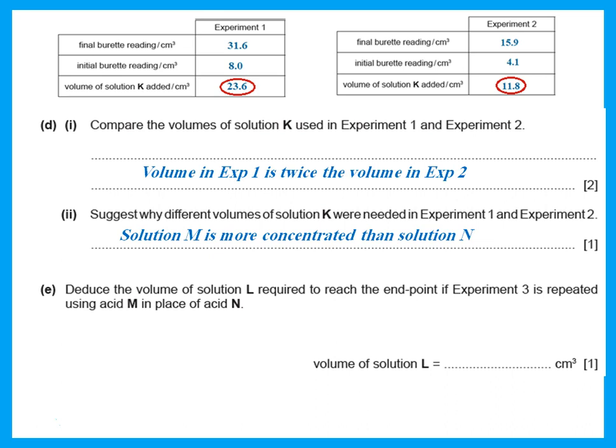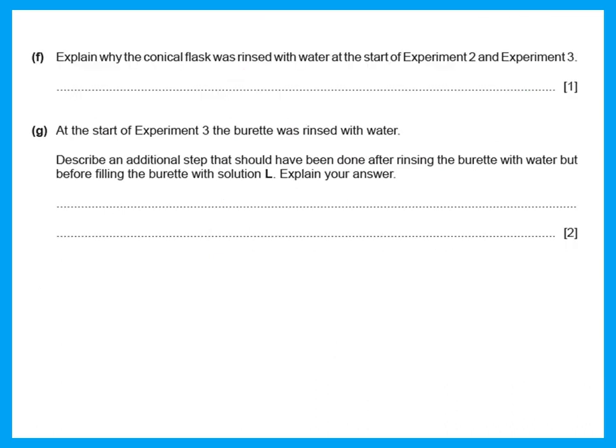Predict the volume of solution L required to reach the end point if experiment three is repeated using acid M. We decided that acid M is twice as concentrated as acid N, so the volume needed with acid M would be twice the volume obtained for acid N in experiment three. The reason the conical flask was rinsed with water was to remove traces of a previous solution.